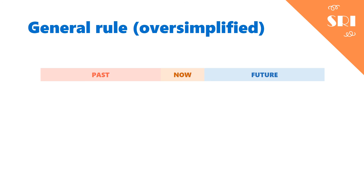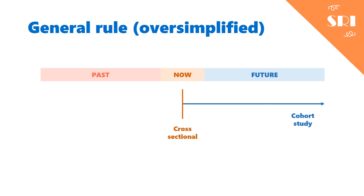As a general rule to keep in mind: cross-sectional studies occur at a certain point in time, most likely now; cohort studies go into the future; and case-control studies look to the past. Thank you very much. I hope this cleared up some confusions for you and didn't create new ones. Best of luck.